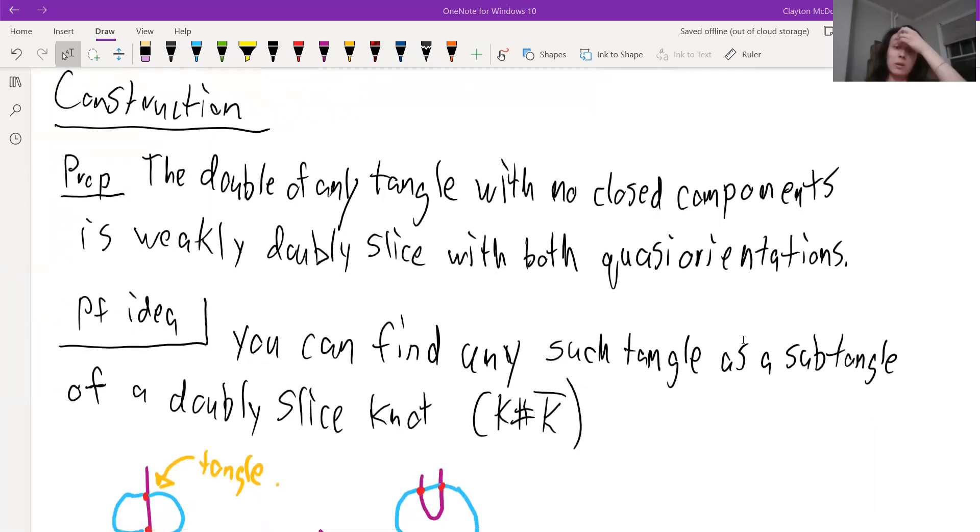And so what's the idea here? Well, if we take a tangle, we can think of that as a subtangle of a doubly slice knot K. So first, what you can do is you can kind of join all of the ends to get a single component. Then we know that K connect sum K bar is doubly sliced for any K.